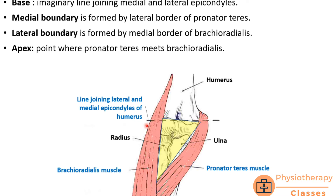The base is formed by joining the medial epicondyle with the lateral epicondyle of the humerus by an imaginary line. The apex is formed where pronator teres meets brachioradialis. The medial boundary is formed by the lateral border of pronator teres, and the lateral boundary is formed by the medial border of brachioradialis.